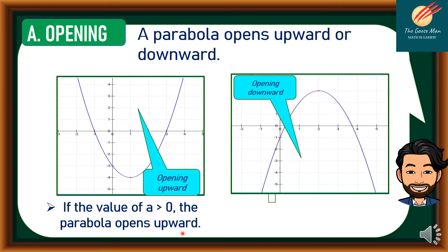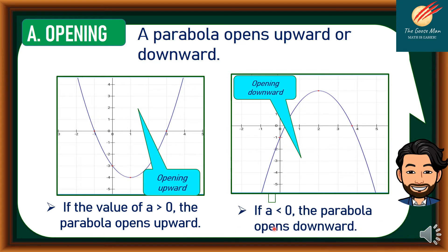On the other hand, if a is less than 0, or if a is negative, the parabola opens downward. So that is why we have opening upward and opening downward.